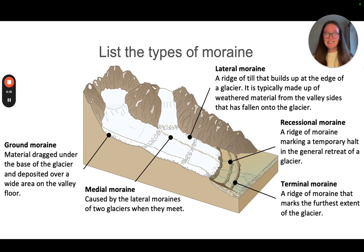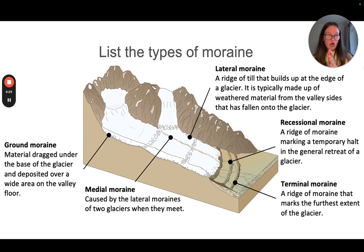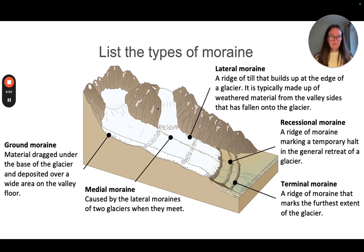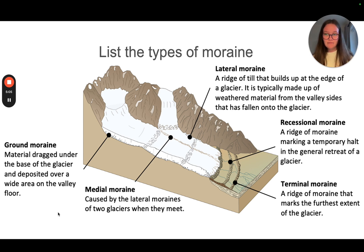In your books or on your sheets, list the various different types of moraine — there are five. We have our terminal moraine, where the glacier terminates. As the glacier retreats, that's what we call a recessional moraine — there are clear barriers showing where the glacier once was. The moraines at the sides are called lateral moraines. Where a tributary glacier and the main valley glacier join, their lateral moraines combine in the middle to form medial moraine. Finally, ground moraine is what's underneath the bed of the glacier.